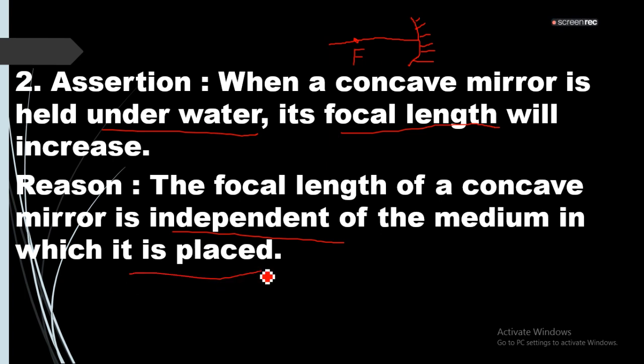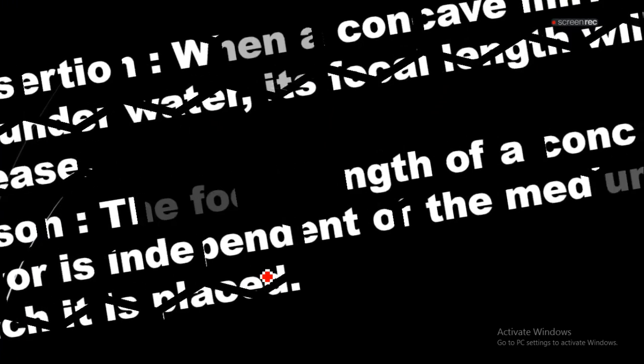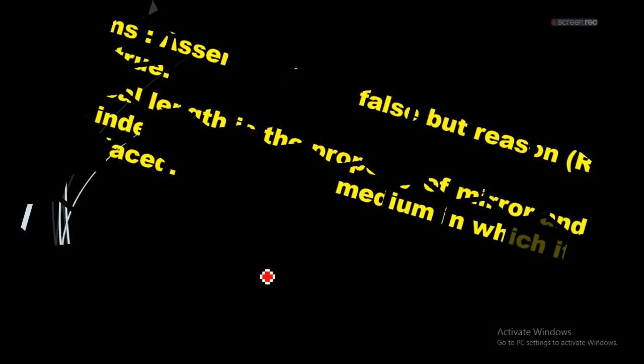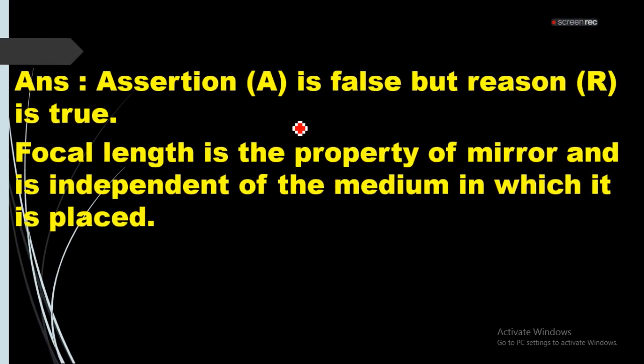That means A is false but R is true. A is false but R is true. See the answer. Assertion is false but reason is true. So focal length is the property of mirror and it is independent of the medium in which it is placed.